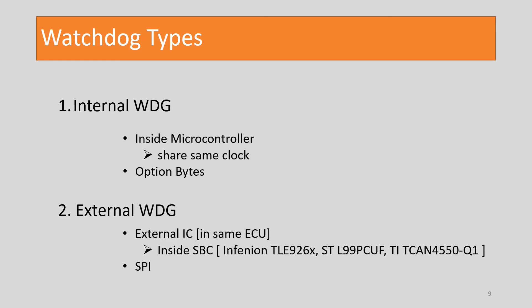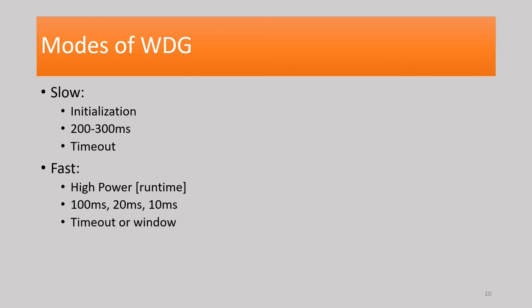In automotive, ECUs will have two modes of operation: slow and fast. Slow mode is the default mode which will be applied during initialization. Typically it will be around 200 to 300 milliseconds. It will be more apt during initialization to have slow mode as it is not convenient to trigger during the init sequence. The mode can be changed to fast mode at the end of the init sequence or in one of the periodic tasks.